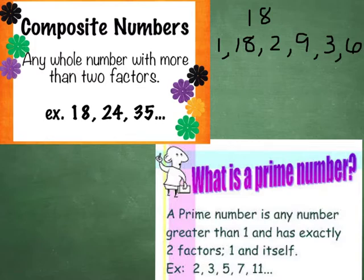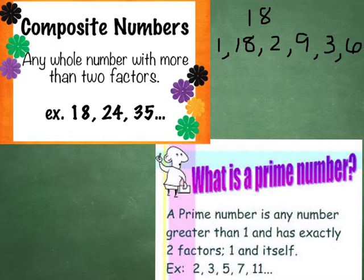The same is true with 24 and 35. It only has to have more than 2 to be a composite — it could have just 3 factors, but if it has more than 2, it is a composite. So on the opposite side, what is a prime number? A prime number is any whole number greater than 1 that has only 2 factors, and those would be 1 and itself.